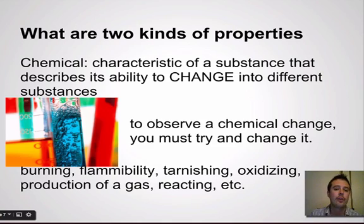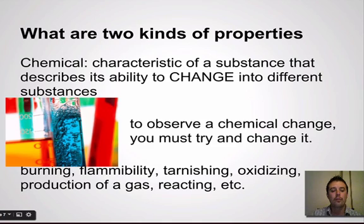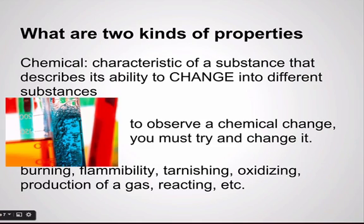Chemical properties are different. Chemical properties are characteristics of a substance that describe its ability to change into a different substance. The only way you can identify a chemical property is if you actually observe a chemical change — you must actually try and change it. For example, if a substance can burn, catch on fire, tarnish, rust, or produce any sort of gas or react, then it can undergo a chemical change.